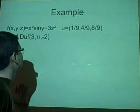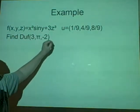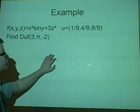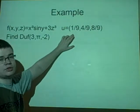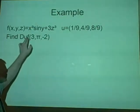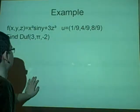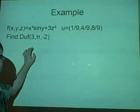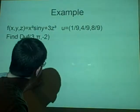Right, now an example. We are given a function f of x, y, and z equals x squared times sin y plus 3z cubed, and we're given our direction, which is u as a ninth, four ninths, and eight ninths, and it's telling us to find the directional derivative at the point 3 pi and minus 2. To start off with, we do have to find the partial differentiation of delta x, delta y, and delta z from this equation, which should be alright.